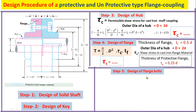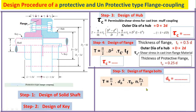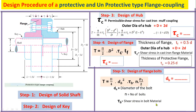The last step is design of flange bolts. Using the bolt torque formula, find the core diameter of the bolt d_b, where n is the number of bolts (which depends on the shaft size), τ_B is the shear stress induced in the bolt material, and d1 is the pitch circle diameter of the bolts. The pitch circle diameter is the diameter of the circle on which the bolts are arranged.